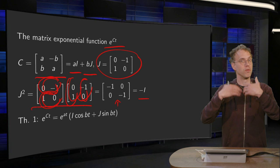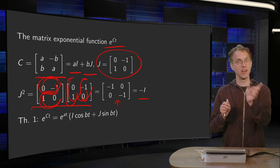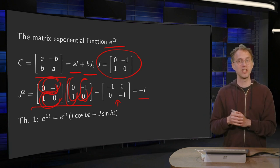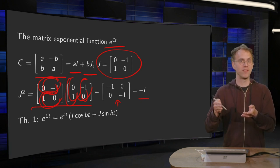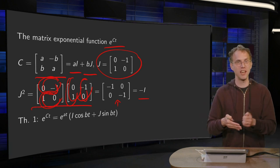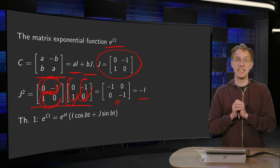So if you compute for example j to the power of four, you get j squared times j squared, which gives you the identity matrix. And j to the power of five gives you identity times j, which gives you j again. So computing powers of j is easy.